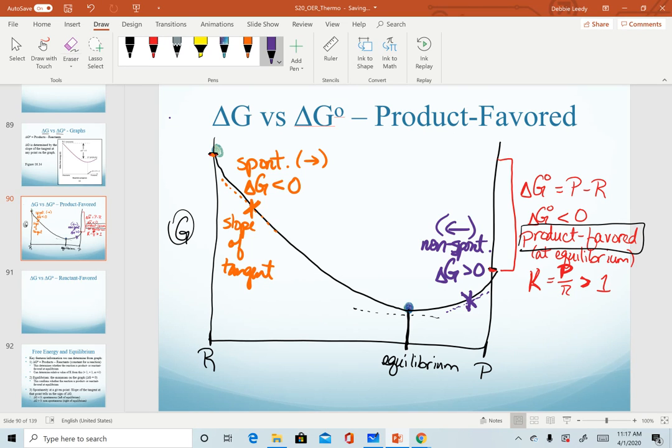So again, we already pointed out where equilibrium is. We already know that equilibrium is at this minimum point. And if we look at the slope of our tangent at this point, we see that delta G is equal to zero. So a couple of videos ago, we defined that when delta G non-standard equals zero, this is when our system has reached equilibrium. For every graph, that's going to be the very minimum of our graph.